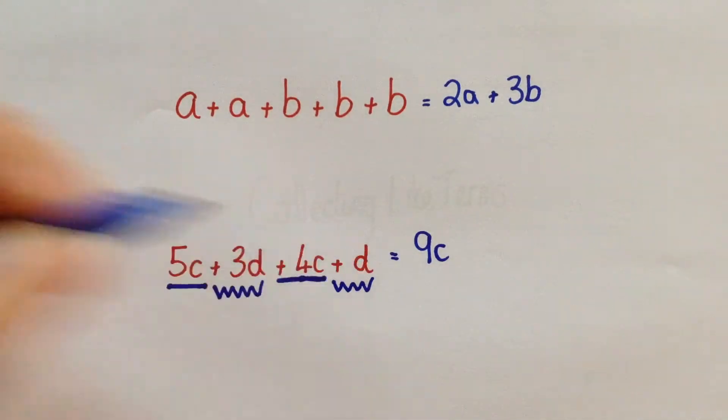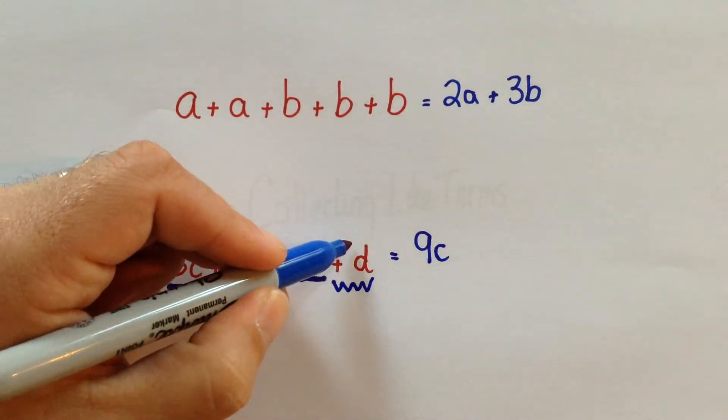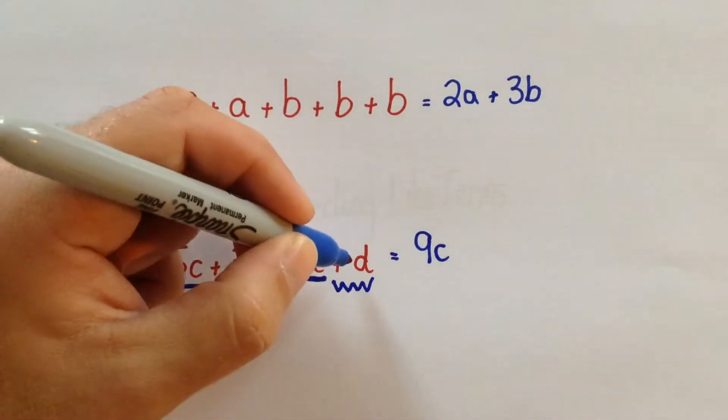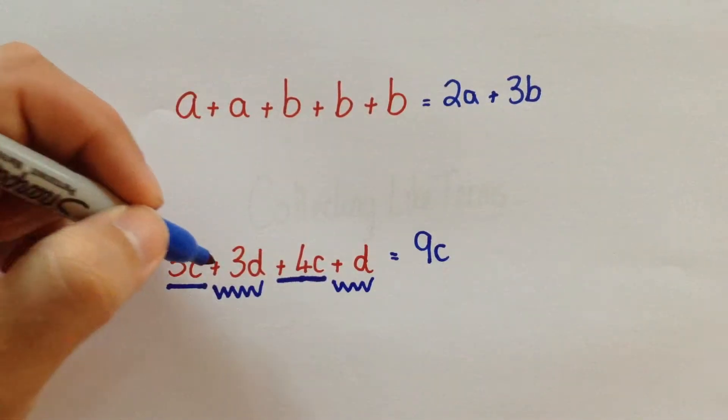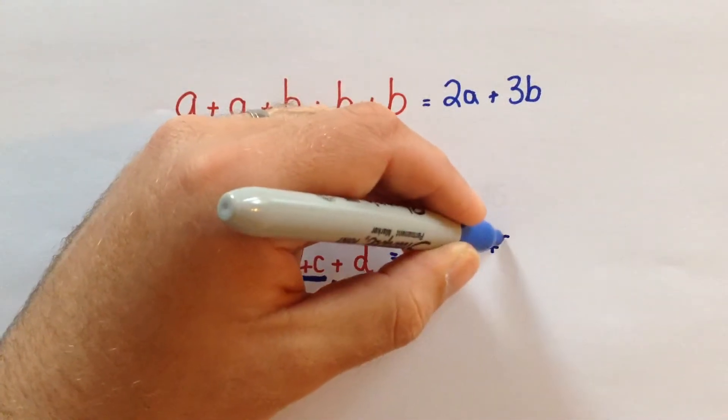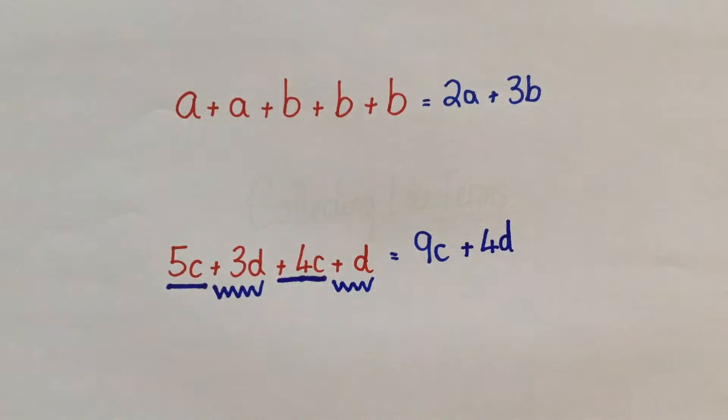If a letter does not have a number in front, it means there is just one of them. So here, we are doing 3D plus 1D. So positive 3 plus 1 is positive 4. That's why we would put plus 4D.